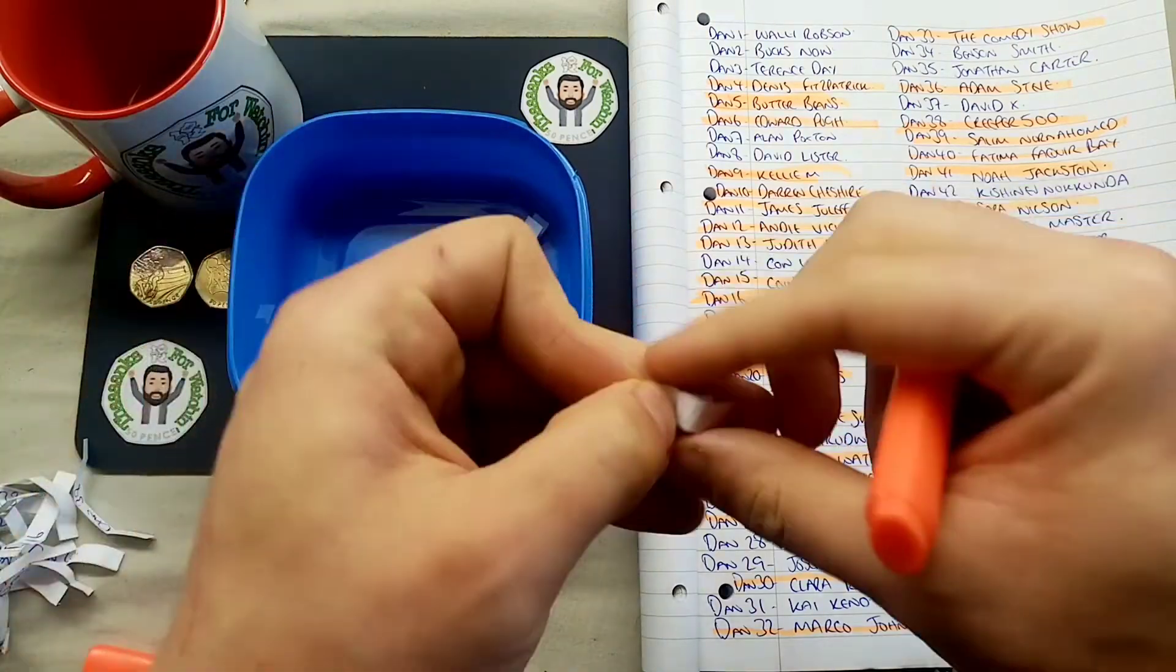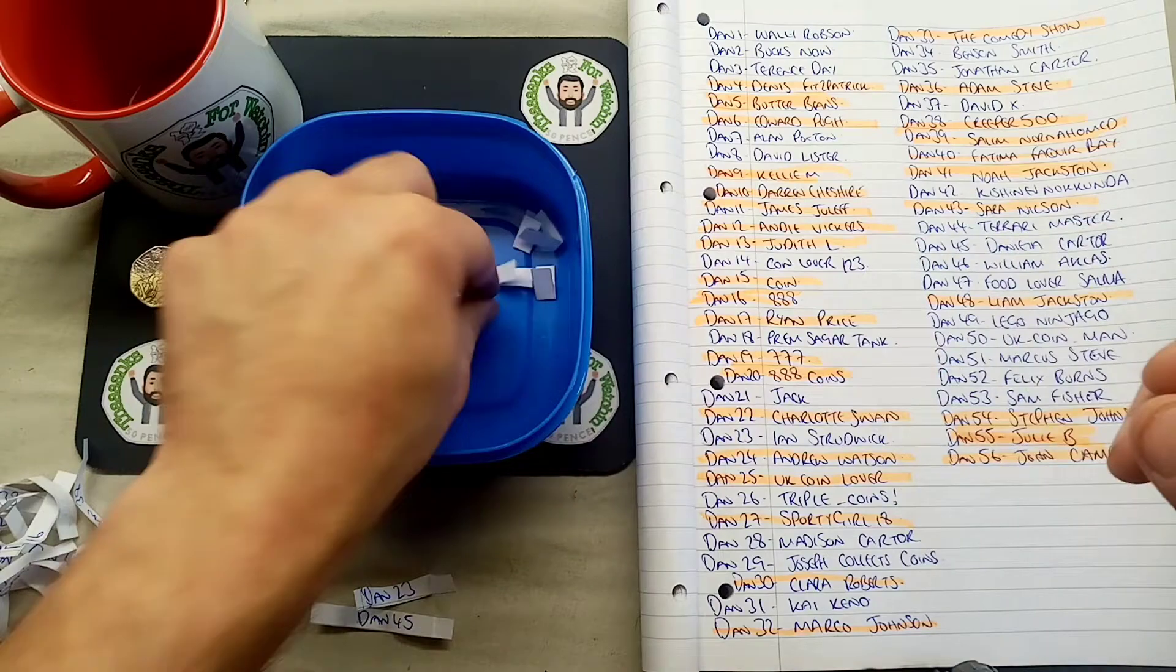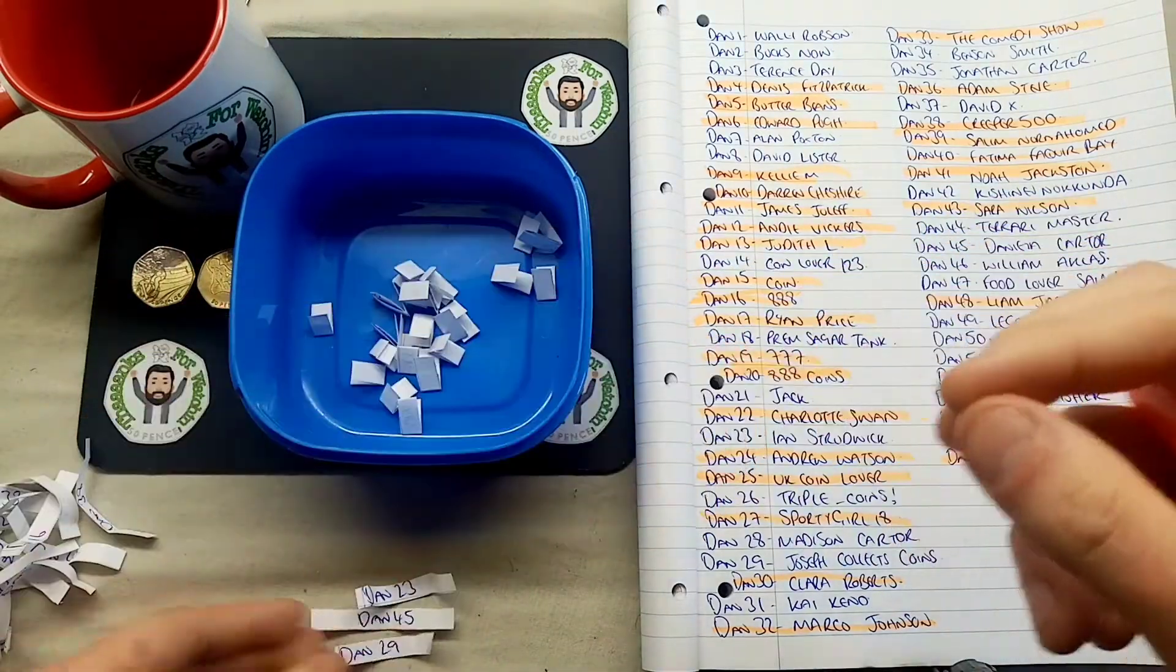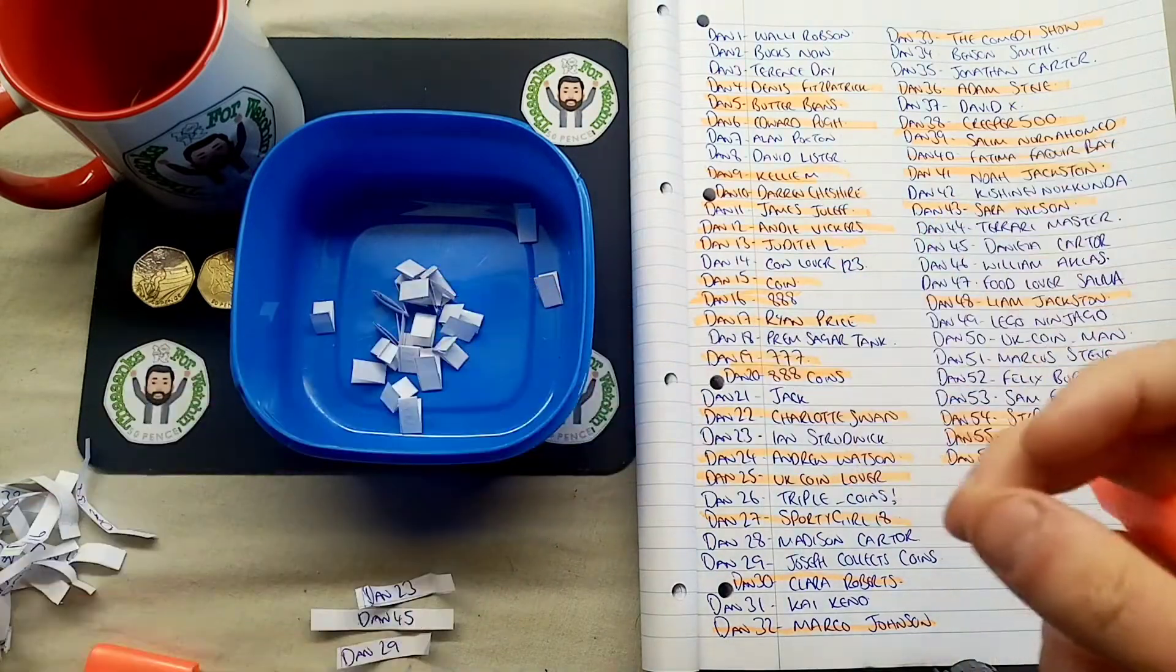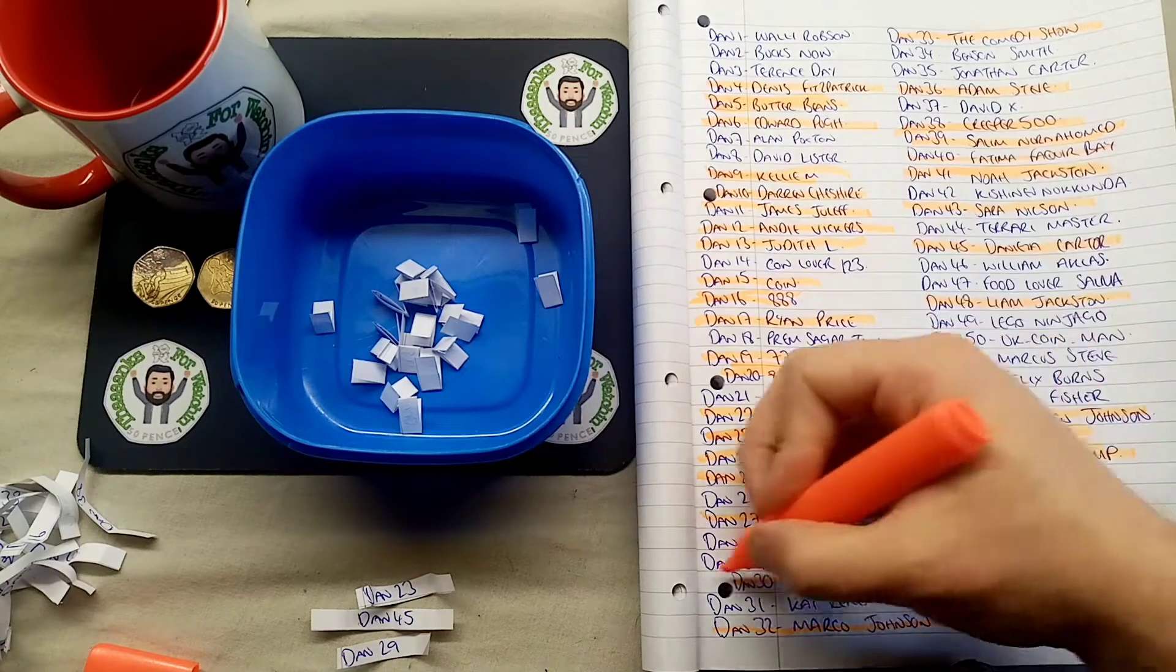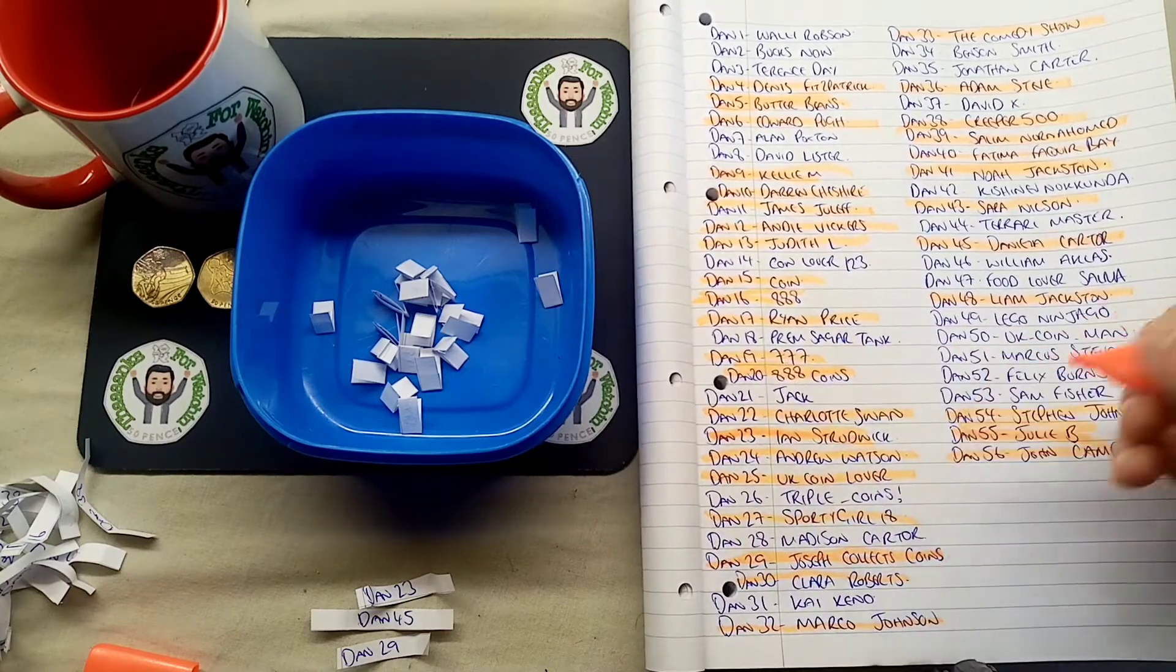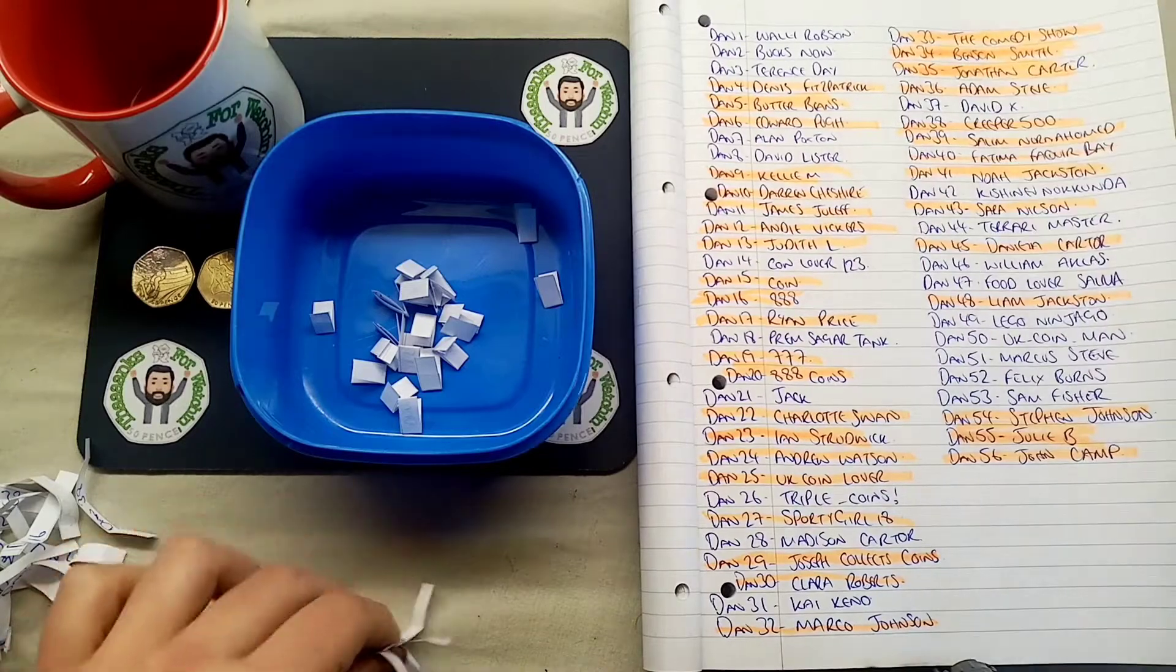The next one then is Dan number 23. That's then going to be followed by Dan 45. The third coin in this round is Dan number 29. The fourth one Dan 34. And we'll grab one more to make it five. It's Dan number 35. So Ian Strudwick is out in this round. Unfortunately that's the end of Daniela Carter. Joseph collect coins. And also Joseph Carter there at the top.